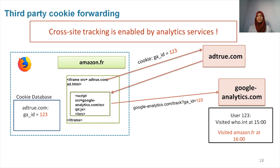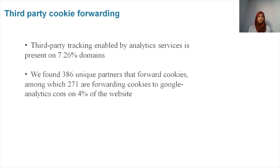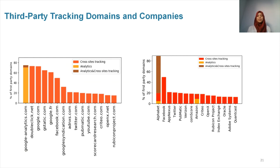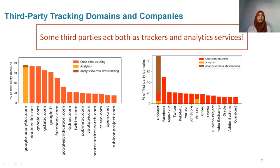In summary, due to this behavior and inclusion of content, analytics services are able to cross-site track users. We found this kind of behavior on 7.26% of the domains we analyzed. We found 386 unique partners that forward cookies, among which 271 are forwarding cookies to google analytics.com. And so, Google Analytics by itself is cross-site tracking the user on 4% of the websites. We detected six different tracking categories in total, and we found at least one type of tracking category on 92% of the domains we analyzed. In these figures, we present on the right companies and on the left domains that perform either analytics (shown in yellow), cross-site tracking (in red), or both analytics and cross-site tracking inside the same websites (in brown). As you can see, domains such as Google Analytics can perform both analytics and cross-site tracking behaviors.